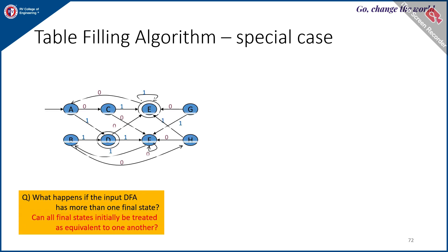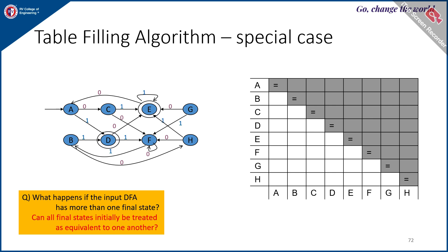Now we come to the algorithm, and a special case: when you have multiple final states, the same approach applies — both D and E, for example, would be considered as final states and the same procedure is followed.